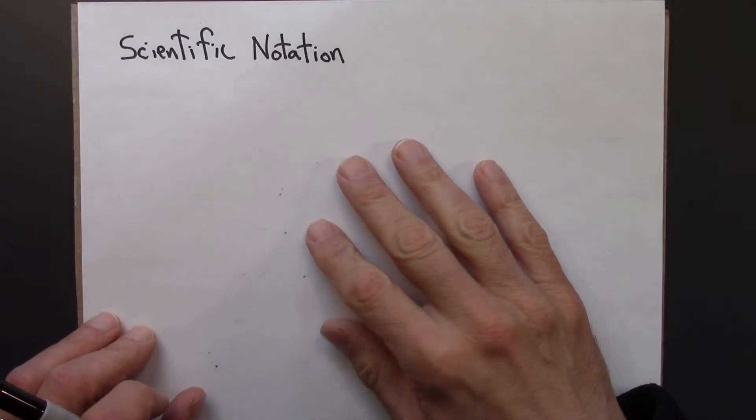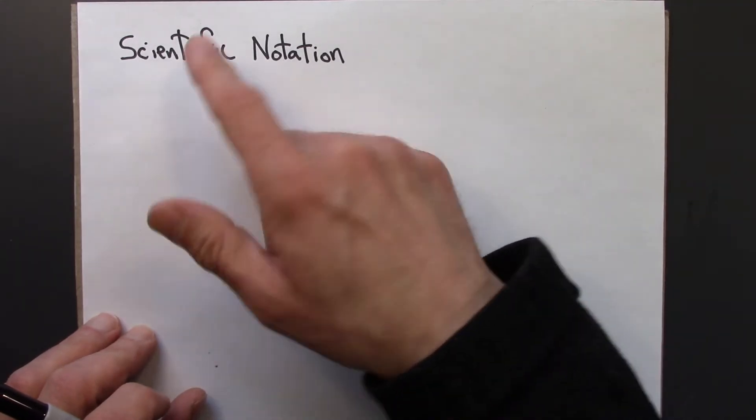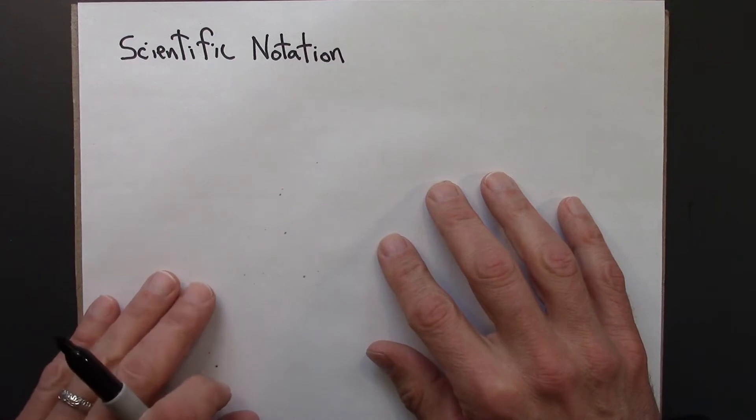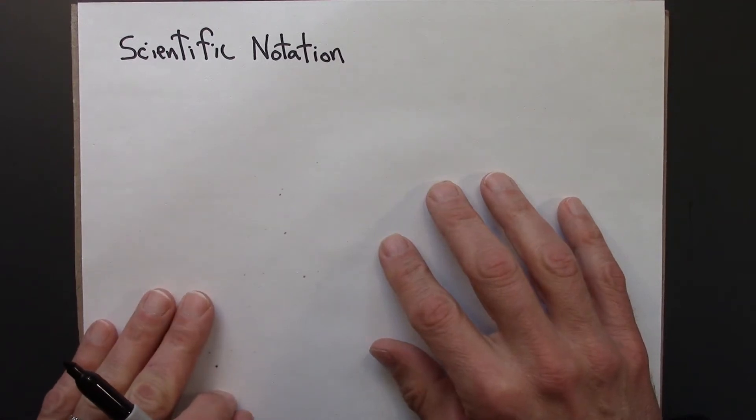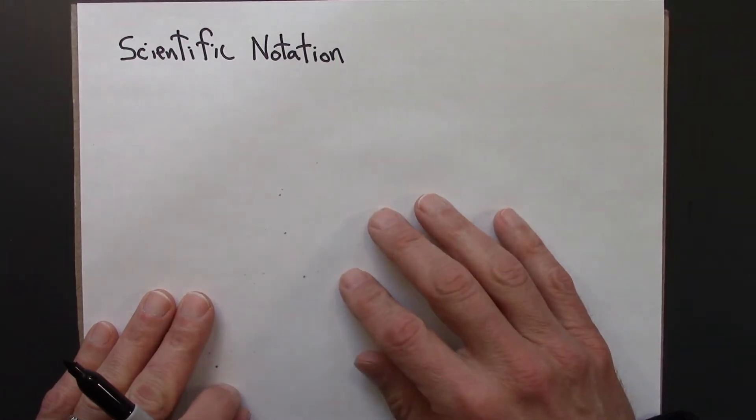Scientific notation is a technique for working with very large and very small numbers. It's very commonly used in the sciences, as the name suggests, and in relativity we're going to be working with both some very large and very small numbers, so I thought reviewing scientific notation would be a good idea.